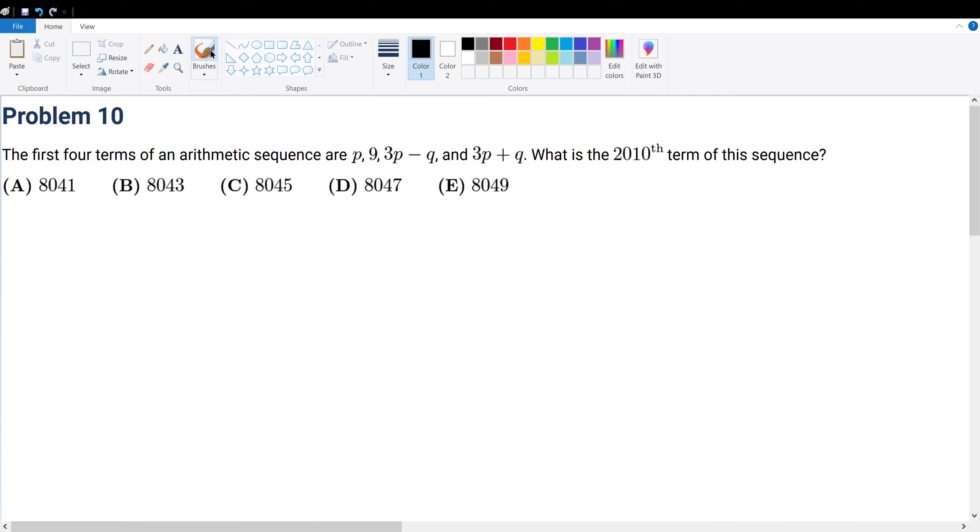Problem 10. We're given the first four terms in an arithmetic sequence being p, 9, 3p minus q, and 3p plus q, respectively. What is the 2010th term for this sequence?